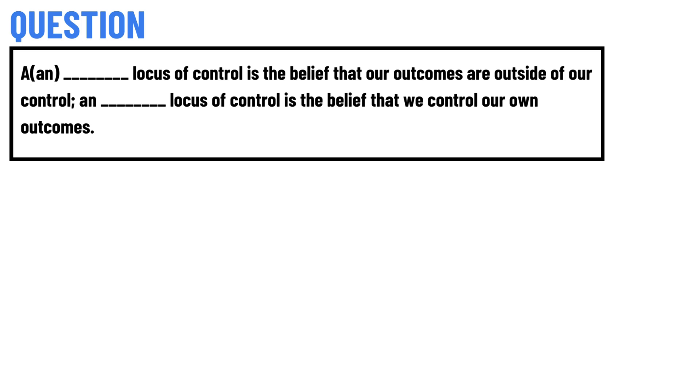So our today's question is: Locus of control is the belief that our outcomes are outside of our control and Locus of control is the belief that we control our own outcomes.